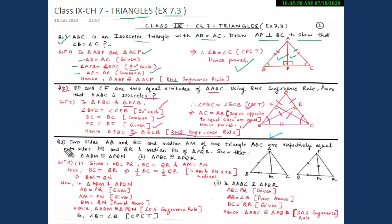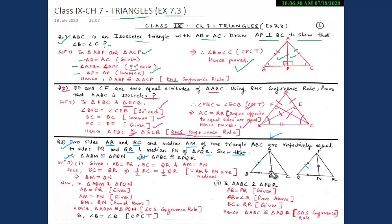Our third question for today is: two sides AB and BC and median AM of triangle ABC are respectively equal to sides PQ and QR and median PN of triangle PQR. We have to show: in the first part, triangle ABM is congruent to triangle PQN, and in the second part, triangle ABC is congruent to triangle PQR. It is given that AB equals PQ, BC equals QR, and median AM equals median PN.